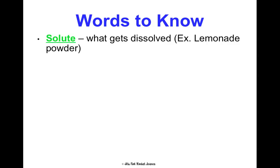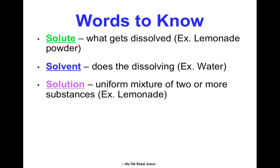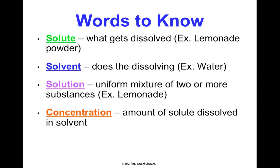Before going further, here are key vocabulary terms. Solute is what gets dissolved — like lemonade powder. Solvent is what does the dissolving — like water. A solution is the uniform mixture of the two — like lemonade itself. Concentration is the amount of solute dissolved in solvent: high concentration lemonade is very strong and sweet, while low concentration is very watery. Concentration can be abbreviated using brackets in your notes.